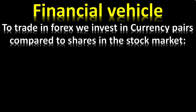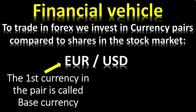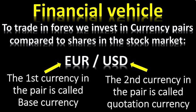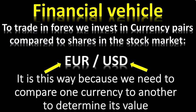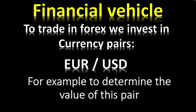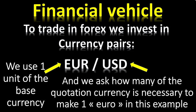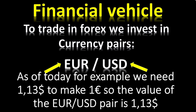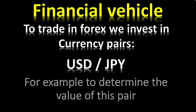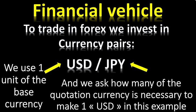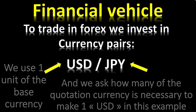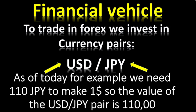Financial vehicles to trade in Forex: we invest in currency pairs, compared to shares in the stock market. The first currency in the pair is called the base currency; the second currency is called the quotation currency. We need to compare one currency to another to determine its value. For example, to determine the value of the EUR/USD pair, we use one unit of the base currency and ask how many of the quotation currency is necessary to make one euro. As of today, we need 1.13 dollars to make one euro, so the value of the EUR/USD pair is 1.13. For USD/JPY, we need 110 Japanese yen to make one dollar, so the value of the USD/JPY pair is 110 yen.